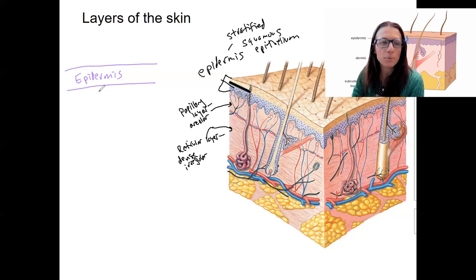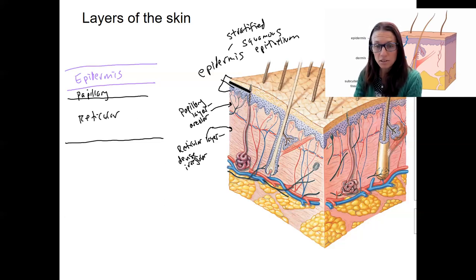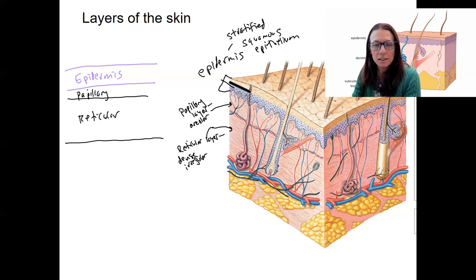I'll come back to that in the next video. This next layer is all connective tissue, divided into the papillary and reticular layers, just as I have to the left. Those two layers, while primarily connective tissue types, also contain things like blood vessels, nerves, and sweat glands — which are especially embedded in the reticular layer. Those are part of the skin.